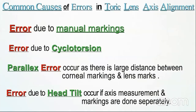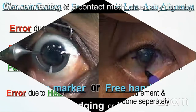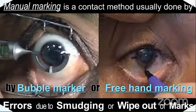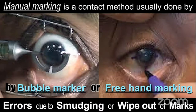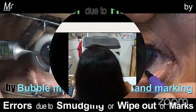The common causes of errors in toric lens axis alignment are errors due to manual markings, errors due to cyclotorsion, and parallax error, which occurs because of the large distance between corneal markings and lens marks. Error due to head tilt occurs if axis measurement and axis marking are done separately. Manual marking is a contact method usually done by bubble marker or freehand marking, and there are chances of error due to smudging or wipeout of marks.